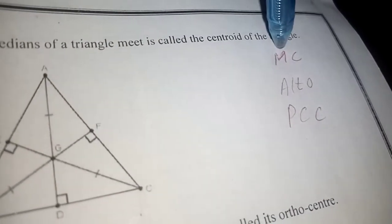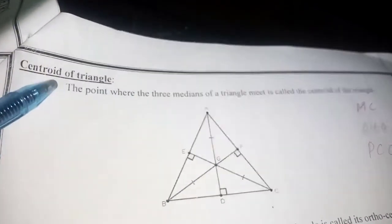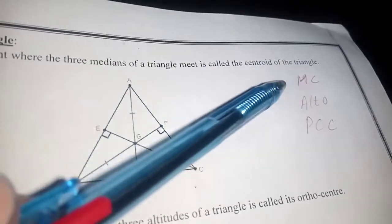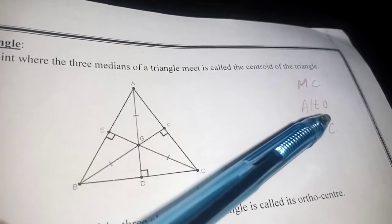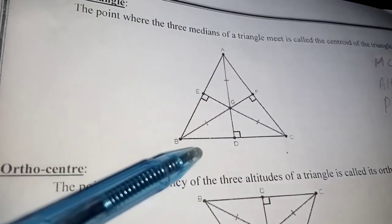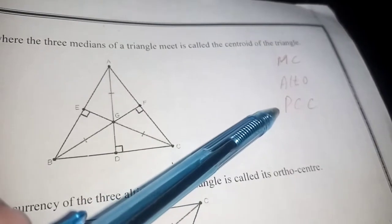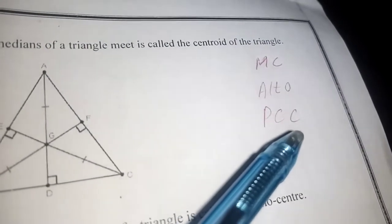Here is a trick to remember these definitions. Consider these pairs: MC, Alto, and PCC. M stands for medians — where the medians of a triangle meet at a single point, that point is called C for centroid. Alto means altitudes — where the altitudes of the triangle meet, that point is called O for ortho center. PCC: where the perpendicular bisectors of the triangle meet, that point is called the circumcenter. So MC gives centroid, Alto gives ortho center, and PCC gives circumcenter.